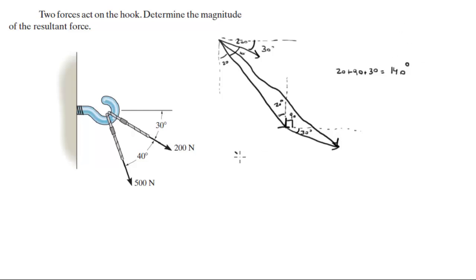So basically this is what you have. You have this triangle. And you know that this angle is 140. You know the magnitude of this side is 200 and you know the magnitude of this side is 500.